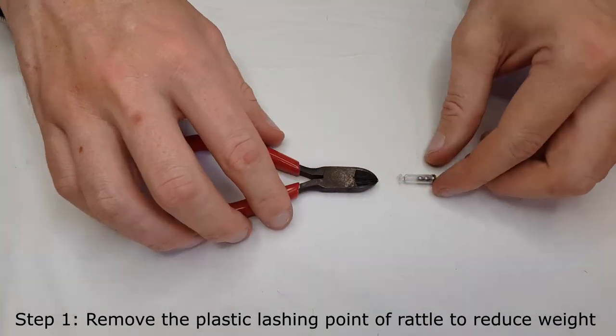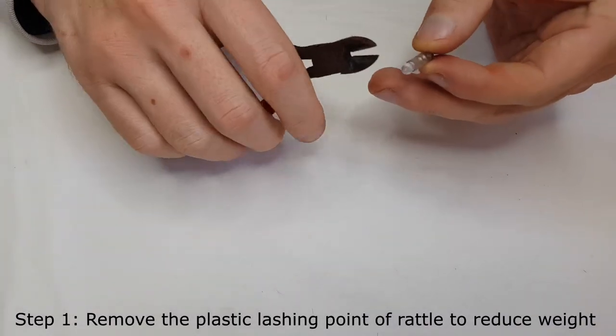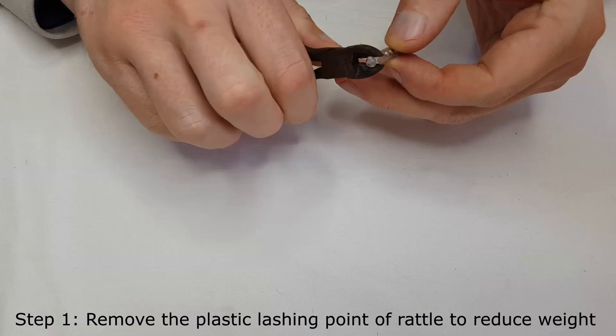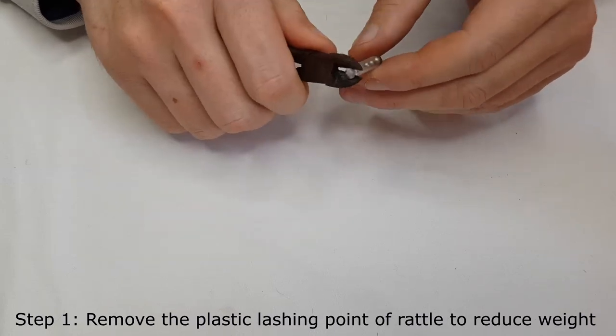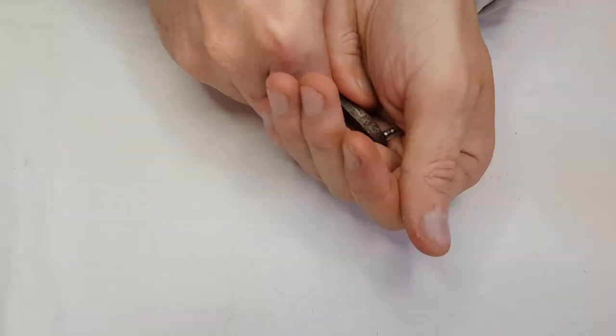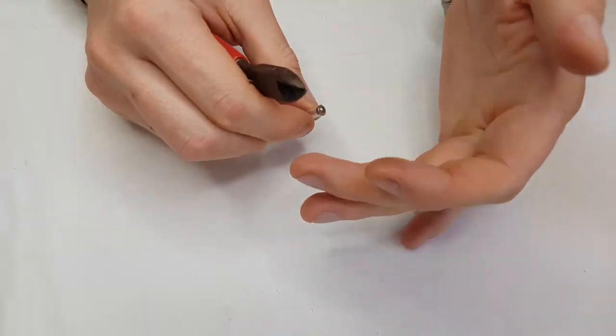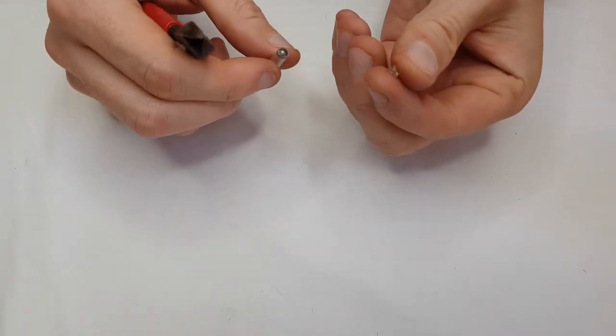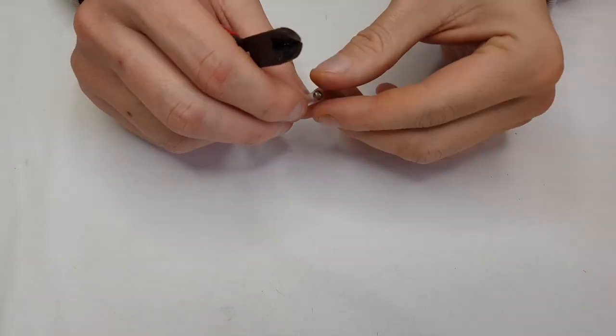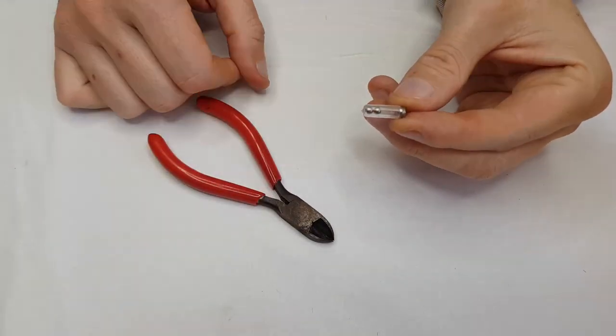Step one: take our side cutters and we're going to remove this lashing point because it adds redundant weight and we're not going to be using that. Throw this piece away which is no longer needed and we are left with this.